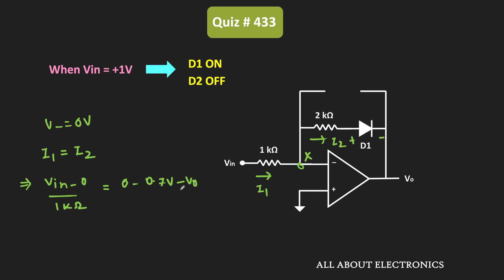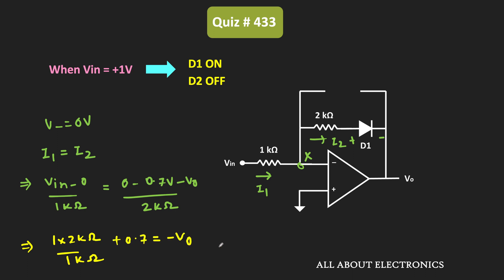With VIN equal to 1V, we get 1 × (2 kΩ / 1 kΩ) + 0.7 = −Vout, so Vout equals −2.7V. That means whenever the input is equal to plus 1V, the output of the op-amp is equal to −2.7V.